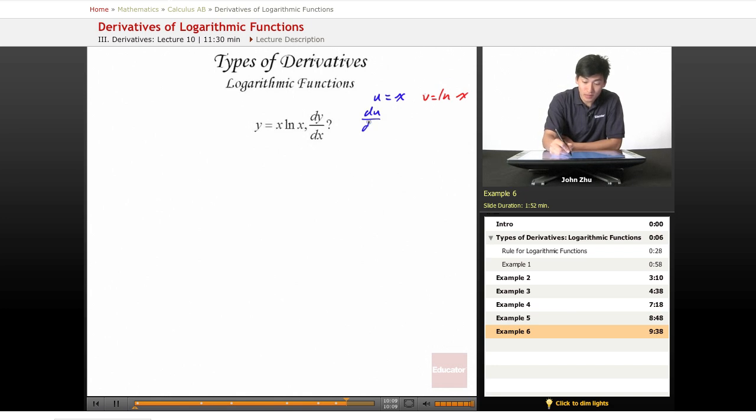du dx is going to equal 1 and dv dx is going to equal 1 over x, just by the straightforward property of derivative of natural log.